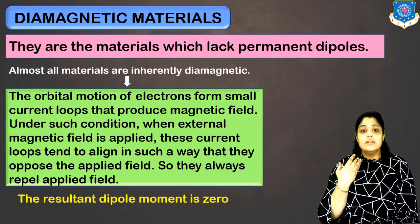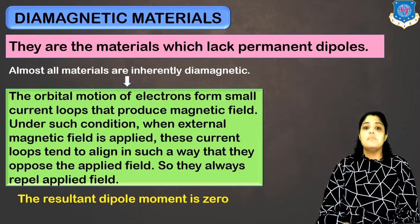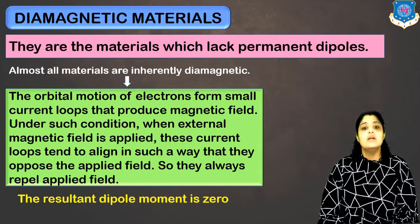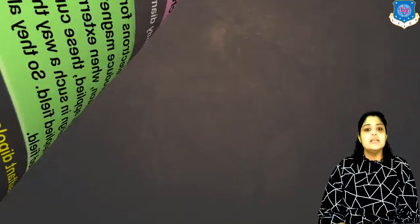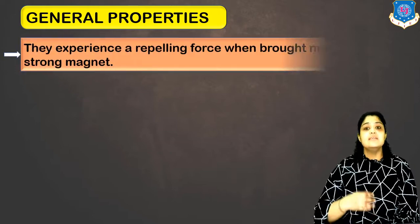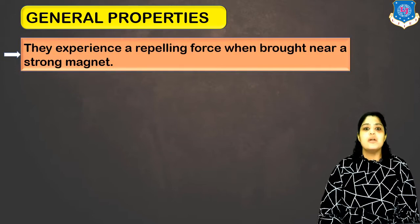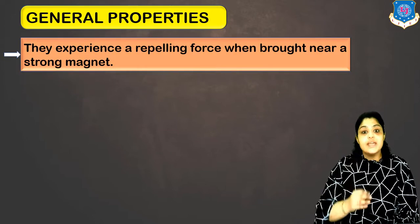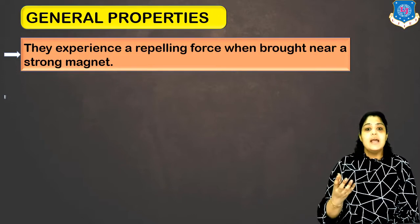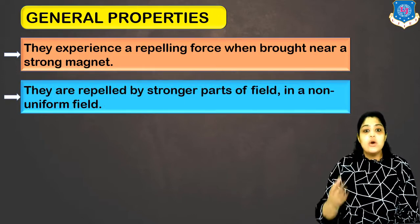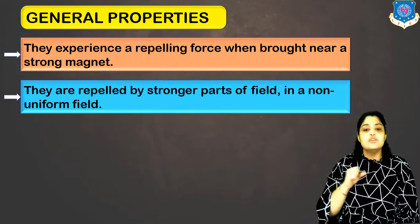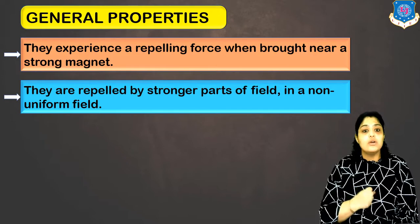The net dipole moment in such magnetic materials is always zero because of the repulsion. Regarding general properties: they experience a repelling force when brought near a strong magnet. If you apply a non-uniform field, they will be repelled more by the stronger parts of that non-uniform field.